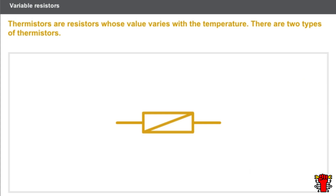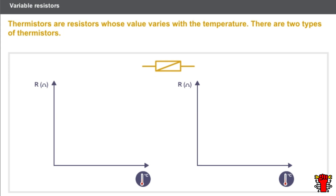Thermostores are resistors whose value varies with the temperature. There are two types of thermostores: negative temperature coefficient, or NTC thermostores, whose resistance decreases when the temperature increases, and positive temperature coefficient, or PTC thermostores, whose resistance increases when the temperature increases.